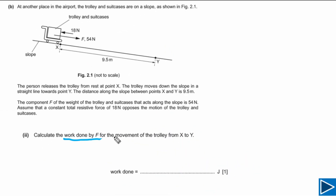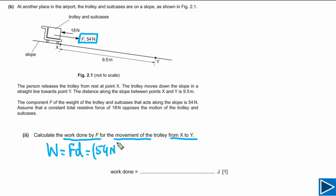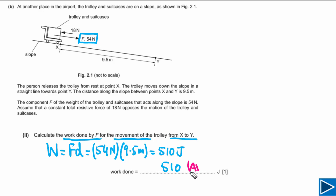For part B2 we need to calculate the work done by F for the movement of the trolley from X to Y. Since force and displacement are in the same direction, W = F × d = 54 N × 9.5 m = 510 joules. This question has only one mark — the answer mark.